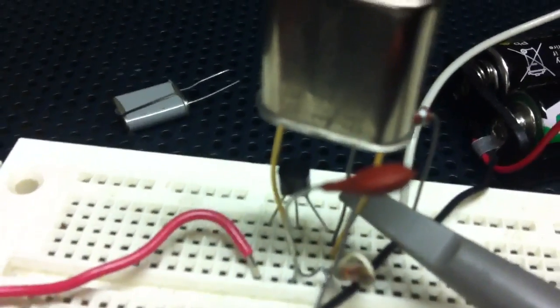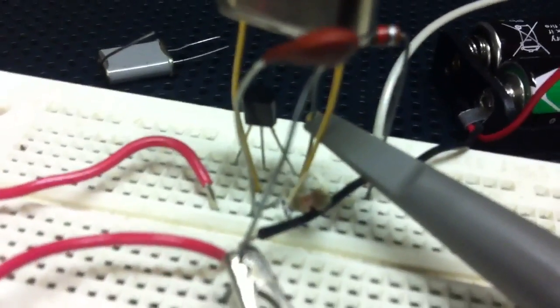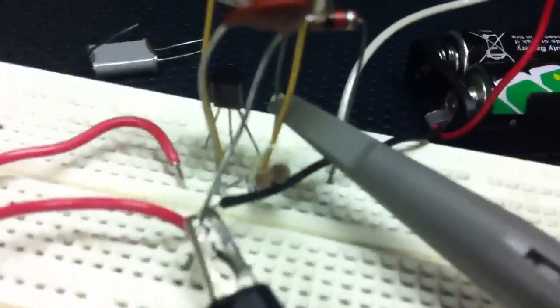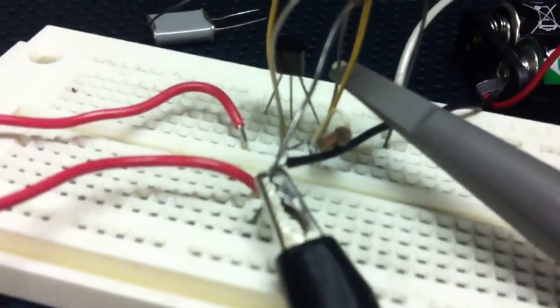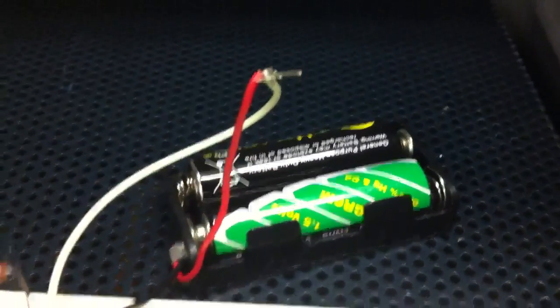The NPN transistor is down there. I've got a little 22k bias resistor going from the collector to the base. Emitter is grounded in this configuration, and at the collector I got a 1k resistor and 3 volts DC power source.